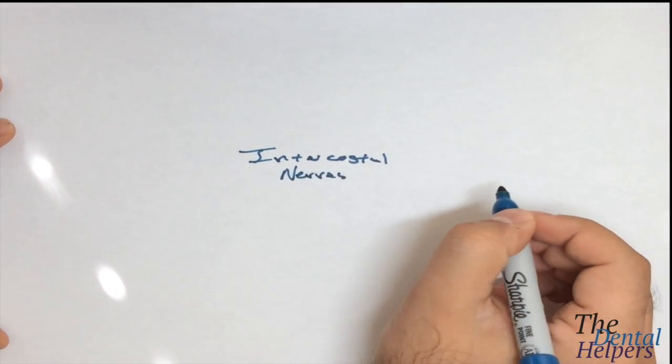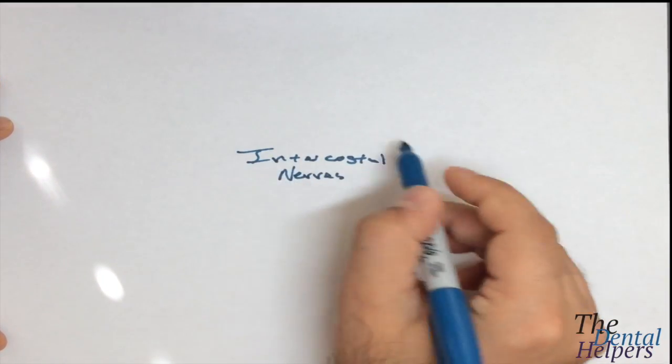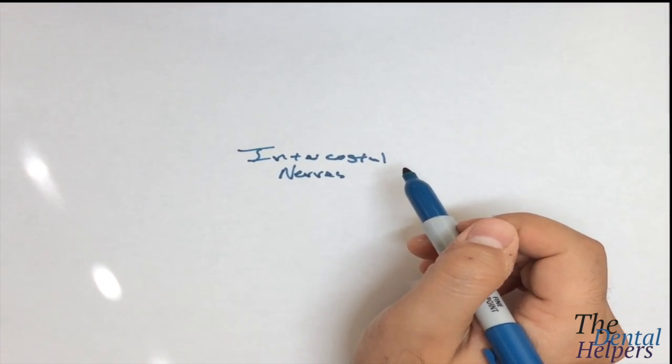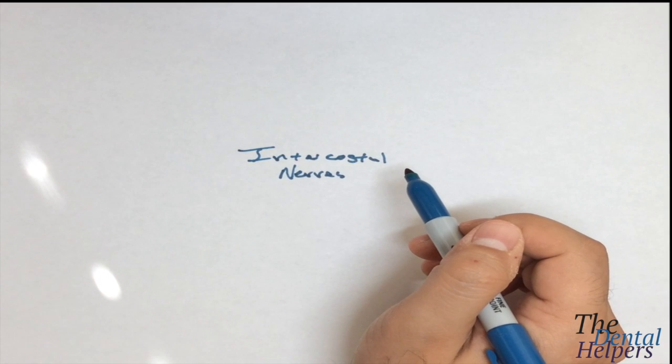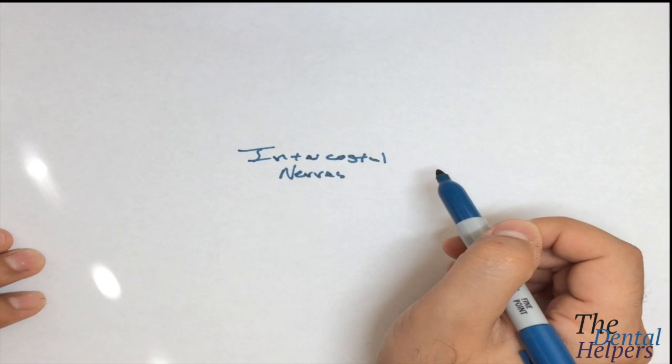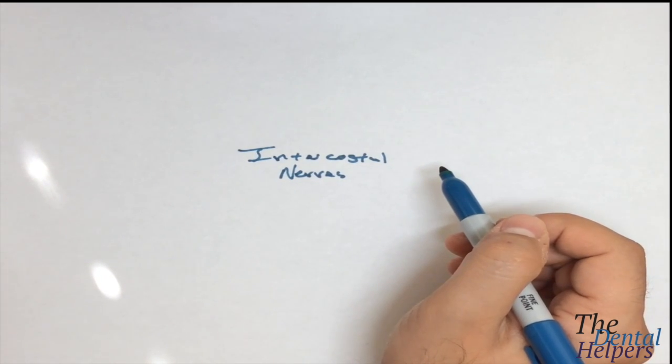These are the nerves that lie under the ribs and innervate all along the intercostal spaces. They provide sensation and sensory innervation for the skin.